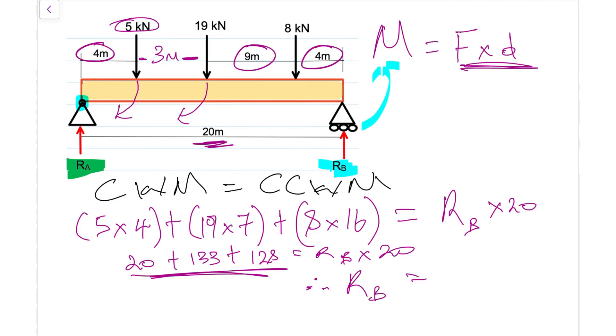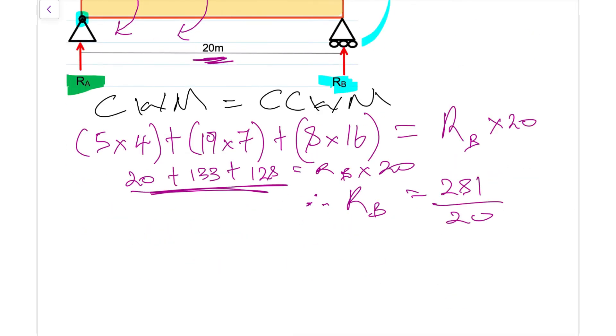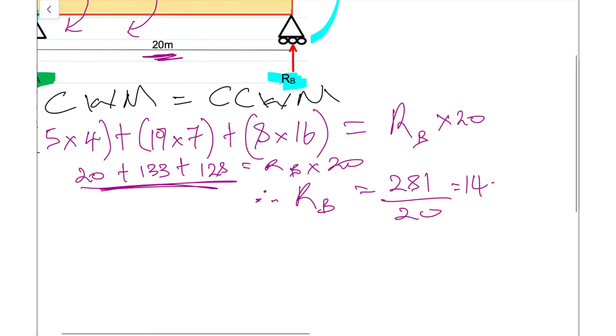To expedite the process, we're simply going to sum all of these and divide by 20 to get what R_B equals. R_B is 281 divided by 20, which is 14.05 kilonewtons. Don't forget the unit.